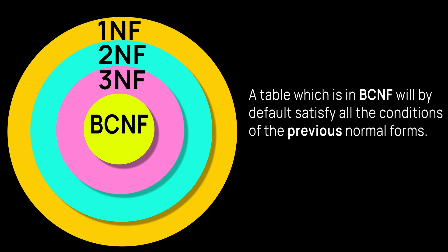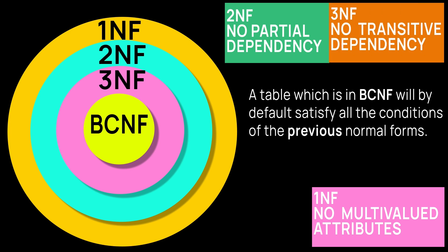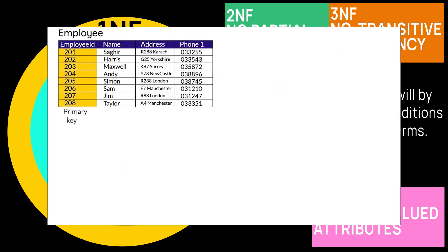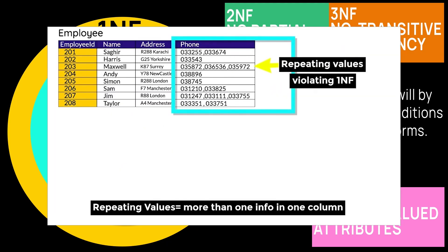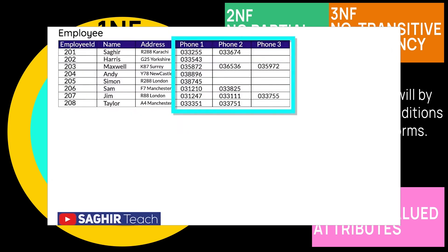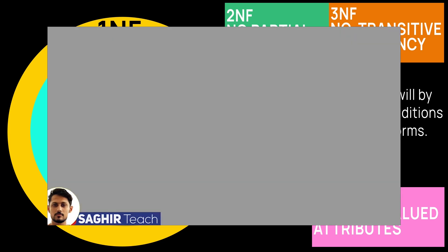To achieve BCNF in a table, we must make sure that the table satisfies first, second, and third normal form. We will see exactly how in this video. Before proceeding, we recommend watching our detailed video on first, second, and third normal forms, where we have thoroughly explained each form of normalization with multiple examples. The video link is in the description.